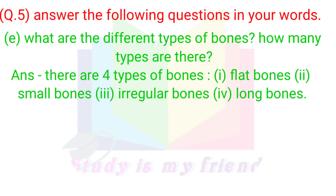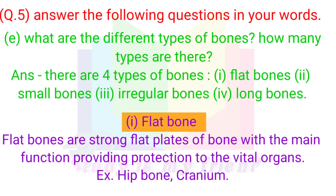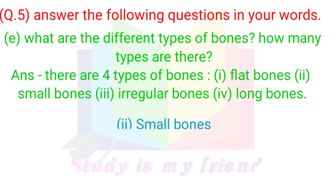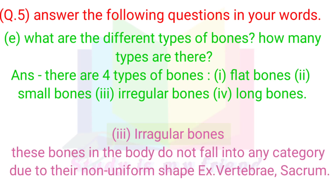Question 5E. What are the different types of bones? There are four types of bones: 1. Flat bones — strong flat plates of bone with the main function of providing protection to the vital organs; examples include hip bones and cranium. 2. Small bones — primary function is providing support and stability with vital movements; examples include wrist and foot bones. 3. Irregular bones — do not fall into any category due to their non-uniform shape; examples include vertebrae and sacrum. 4. Long bones — example: tibia.